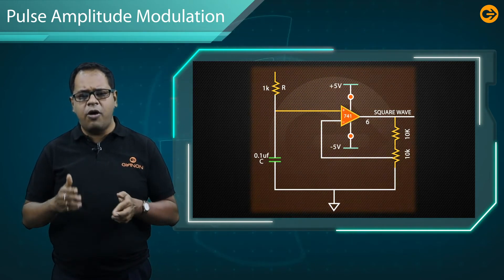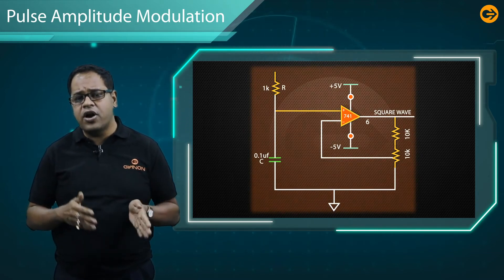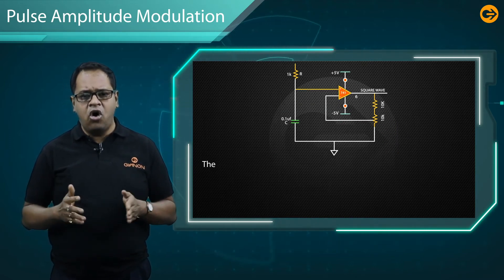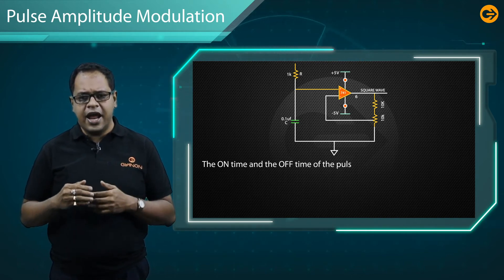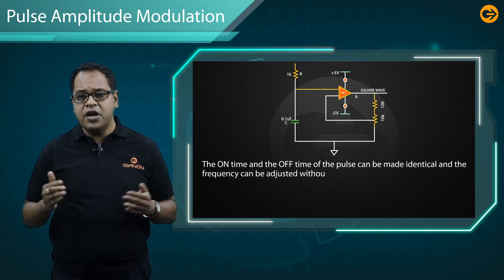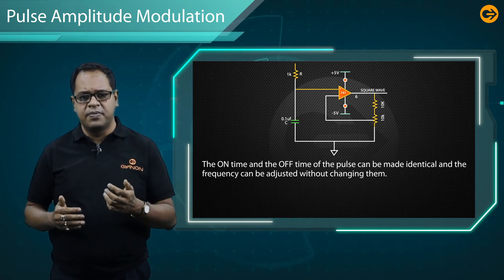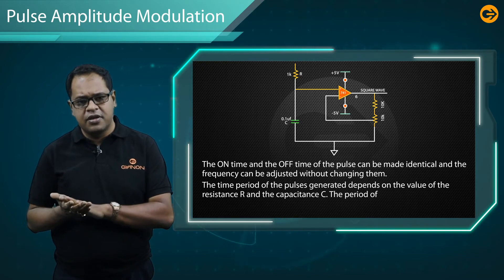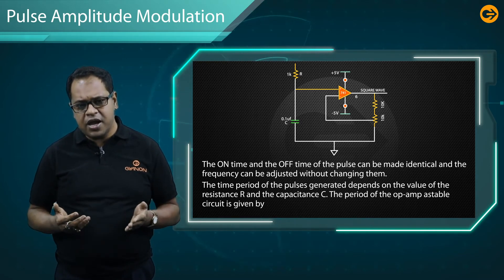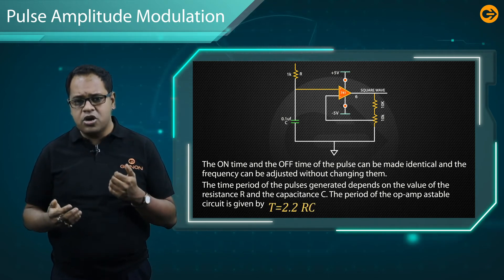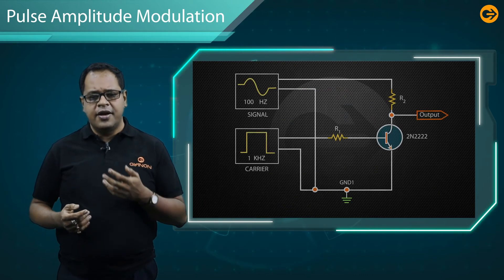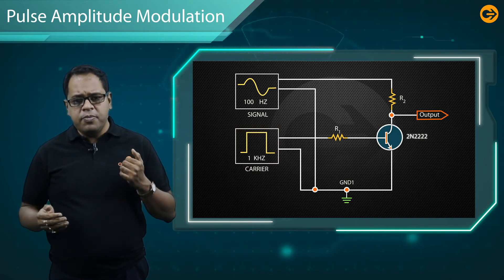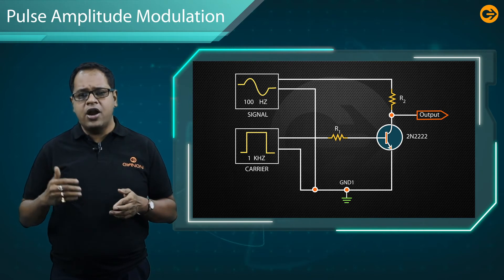The square wave is generated using an op-amp based astable multivibrator circuit. The op-amp is used to reduce the complexity of generating square waves. The on-time and off-time of the pulse can be made identical, and the frequency can be adjusted without changing them. The time period depends on the values of resistance and capacitance, given by T = 2.2·R·C. The sinusoidal signal and carrier wave are applied to a transistor, and the output will be a PAM signal depending on the on and off time of the transistor.